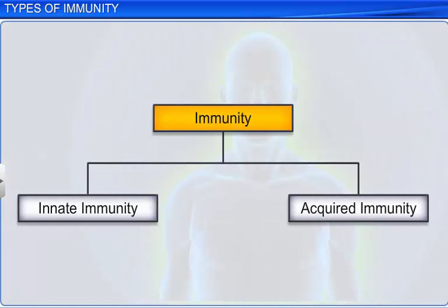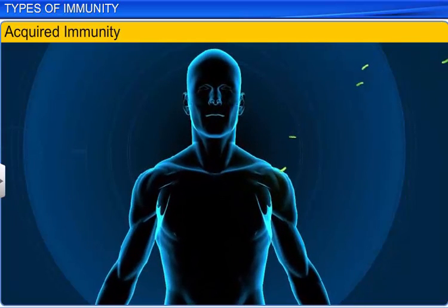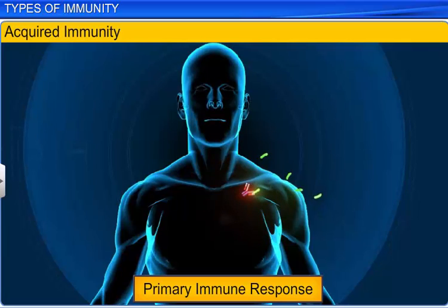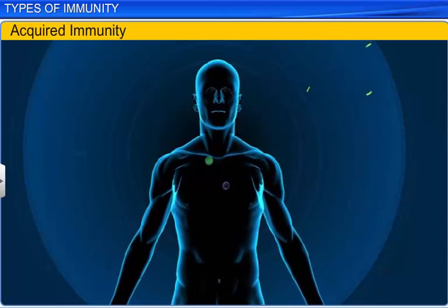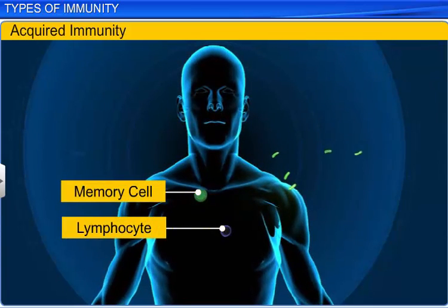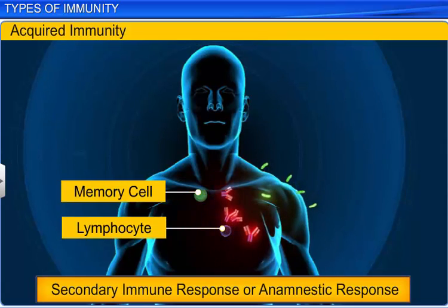On the other hand, acquired immunity is pathogen specific. It depends on the body's memory. For example, when a body encounters a bacterium for the first time, it produces a low intensity response, called a primary immune response, and produces memory cells. However, when the same bacterium attacks again, the memory cells help to elicit a secondary immune response of high intensity. This response is also known as an anamnestic response.